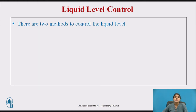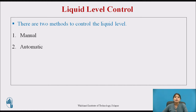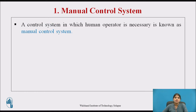There are two methods to control the fluid level. The first method is manual, where we adjust the level of water manually. The second is automatic, where the level is adjusted automatically. We will first discuss the manual control system in detail.